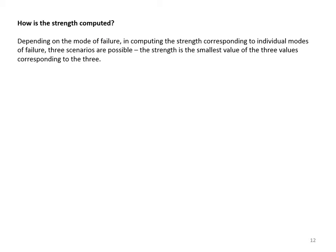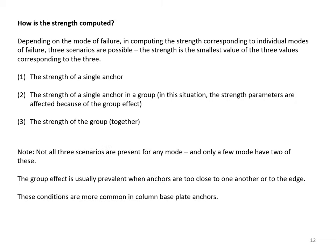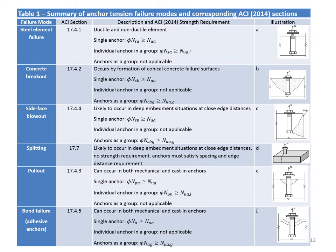How is the strength computed? Depending on the mode of failure, three scenarios are possible. The strength is the smallest value corresponding to: the strength of a single anchor; the strength of a single anchor in a group, where strength parameters are affected by the group effect; and the strength of the group altogether. The group effect is usually prevalent when anchors are too close to one another or to the edge, and these conditions are more common in column base plate anchors.